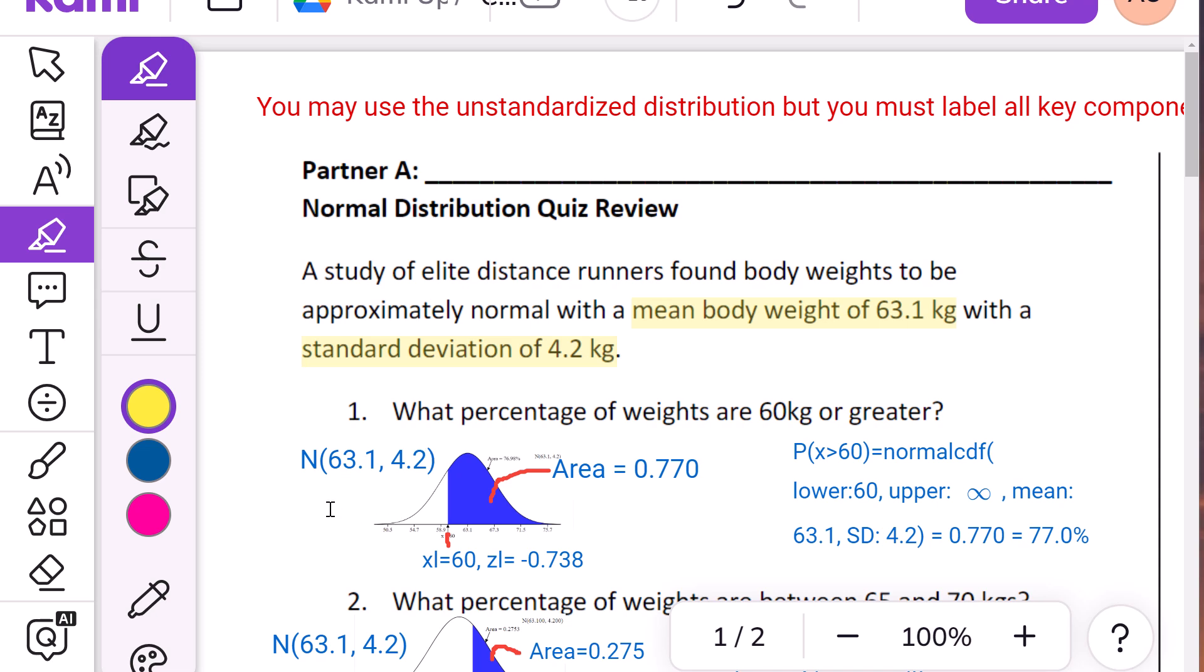Mean body weight of 63.1 kilograms and a standard deviation of 4.2 kilograms. So, again, if you're doing the drawing, you're going to draw this model right here. It's going to be a bell curve. You make sure you label it with that 63.1 and the 4.2. And the N says you're using the normal distribution because that's pretty much mostly what I've taught you.